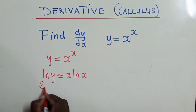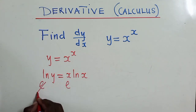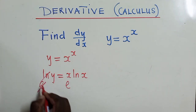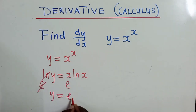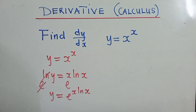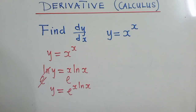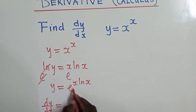The second step is to apply e to both sides. The e will cancel the ln, and we remain with y is equal to e^(x·ln(x)). Now we can find dy/dx over this expression.